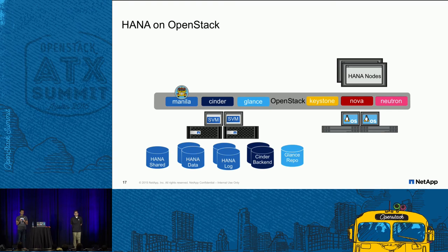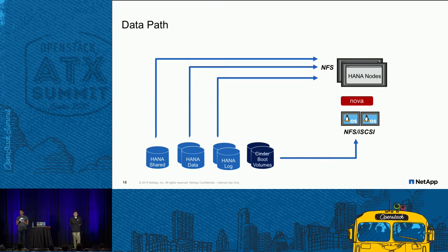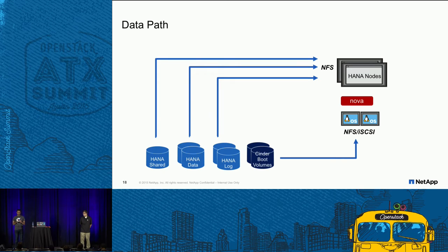All HANA-related data sits on Manila shares — a shared share, data shares, and log shares, which is a standard way to deploy databases. The data is connected directly to the Nova instances using NFS, with the HANA shares directly mounted via NFS. Boot volumes are connected using NFS, and the hypervisor exposes them as a block device.